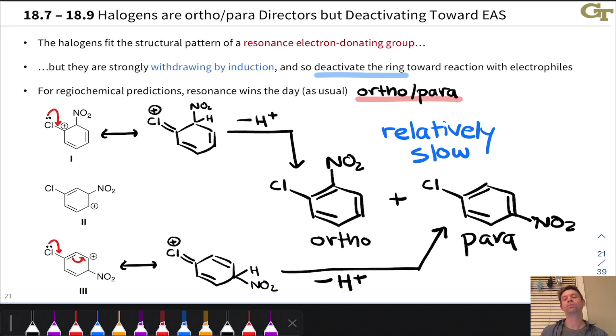However, these form relatively slowly because of the inductive withdrawing effect of the halogen substituent, decreasing the nucleophilicity, the Lewis basicity, of the carbons in the aromatic ring.